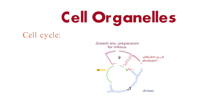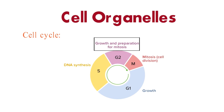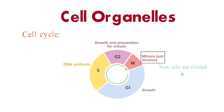Cells have a life cycle, which includes growth, replication, and division. The cell cycle consists of interphase and mitosis, ensuring that new cells are created and old cells are replaced.